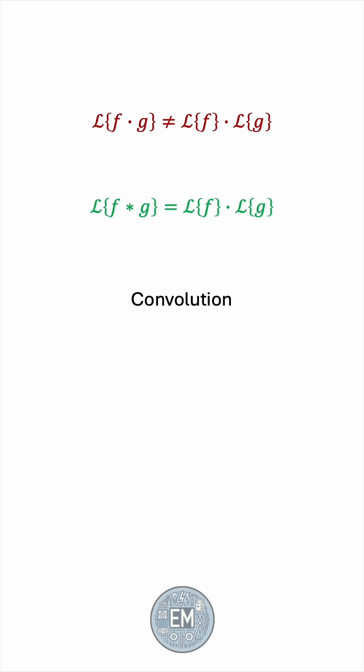The convolution between two functions of time, f and g, is defined as the integral from 0 to t of f of tau times g of t minus tau, d tau, where tau is just a dummy variable for integration.